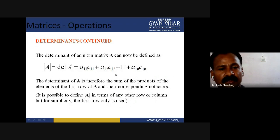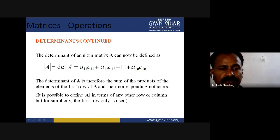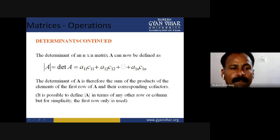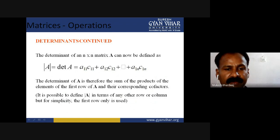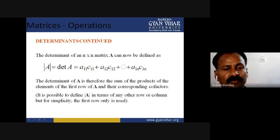Now, how to find out the determinant: the determinant of an n by n matrix A is defined as determinant A equals A_11 times C_11 plus A_12 times C_12 plus ... plus A_1n times C_1n. The determinant of A is the sum of the products of the elements of the first row of A and their corresponding cofactors. It is possible to define the determinant in terms of any other row or column, but for simplicity, the first row is used.